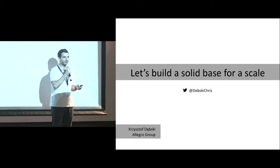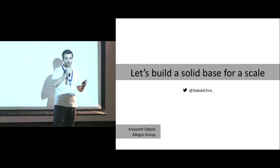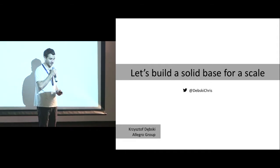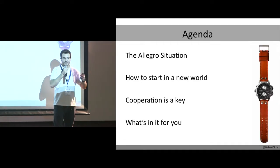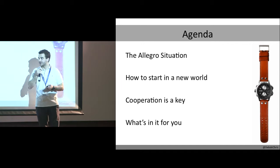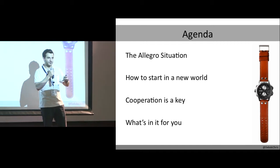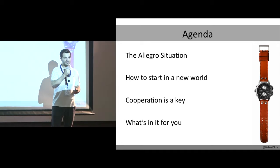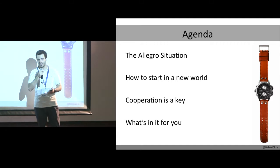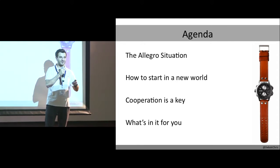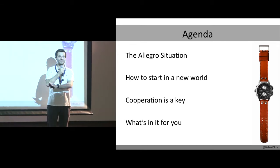I would like to tell you about all the challenges we had during choosing our tools to incorporate in Bootstrap, about all our pitfalls, and how to avoid them. Today we will focus first on Allegro — how it was built 15 years ago, how we want to rebuild it, and where we are looking for new hope. Then we'll look at how to start in a world of services, how to monitor it, deploy it, and why cooperation between services is key. The last part is lessons learned — I think that will be the most important and interesting part.